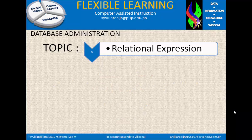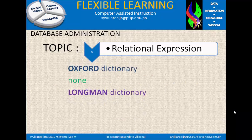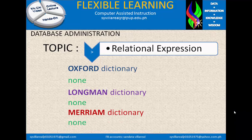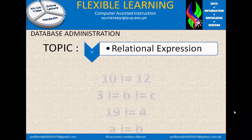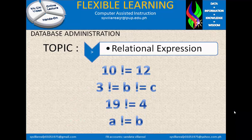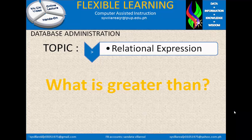What is not equal? In the Oxford Dictionary, Longman, and Merriam Dictionary, there is no standard English meaning — it belongs to the computer dictionary. An example: 10 is not equal to 12, which is true. 3 is not equal to B and not equal to C — true or false. 19 is not equal to 4 — this is true. And A is not equal to B — true or false.